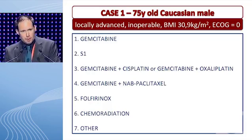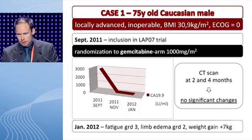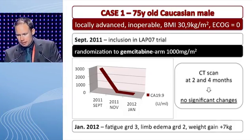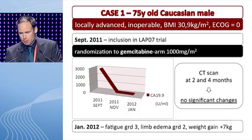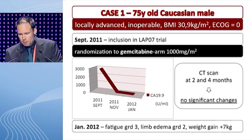Would you offer him chemotherapy with a single agent like gemcitabine or S1? Or would you go for a more intensive therapy like a combination of gemcitabine with a platinum such as cisplatin or oxaliplatin? Or would you go for gemcitabine with nab-paclitaxel? Or even more intensive, a triplet therapy with FOLFIRINOX? Or would you consider this patient a good candidate for chemoradiation? Most of you would choose single agent gemcitabine, and some would choose the combination with nab-paclitaxel. Our patient in September 2011 was randomized in the LAP07 trial to the gemcitabine monotherapy arm at standard dose.